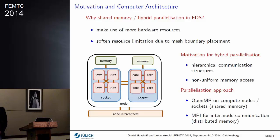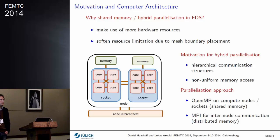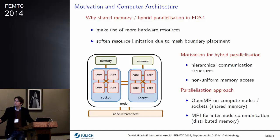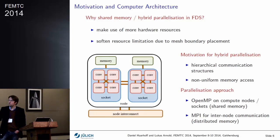If you have a look at modern architectures, for example in a cluster, you've got a cluster built out of computing nodes, whereas each node consists of a couple of sockets — CPUs, in this case two. Each of them has one, two, ten, twelve cores, which can work together. In general, these sockets are bound to a piece of memory, which means one core can access the memory attached to its socket, and also the memory on the other socket because it's on the same node. Whenever you want to use more cores, you've got to use a node interconnect.